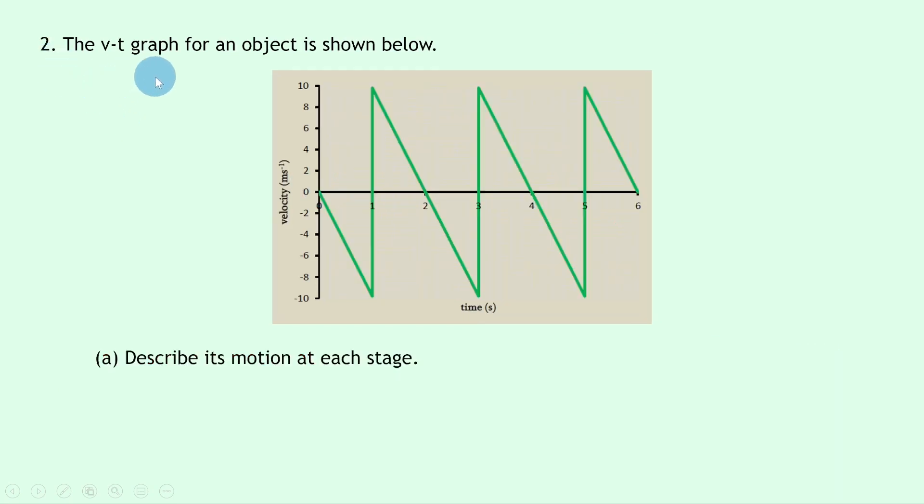Lastly, question two says the velocity time graph for an object is shown below. And you can see from the graph that we have a zigzag type pattern here. Part A says to describe its motion at each stage.